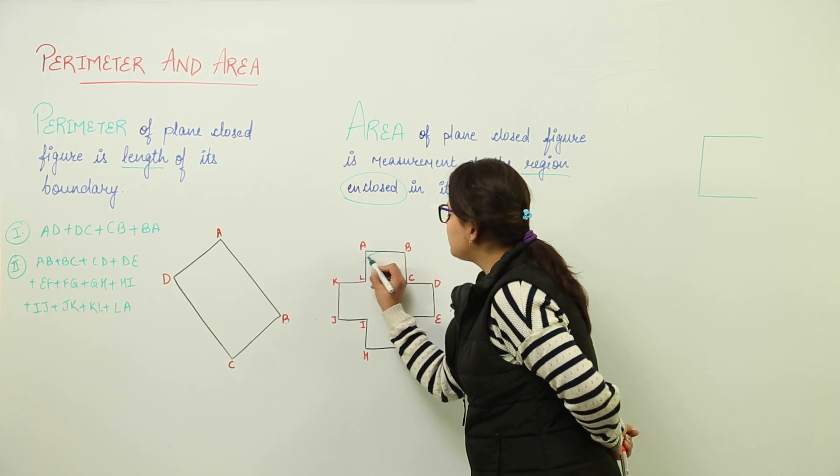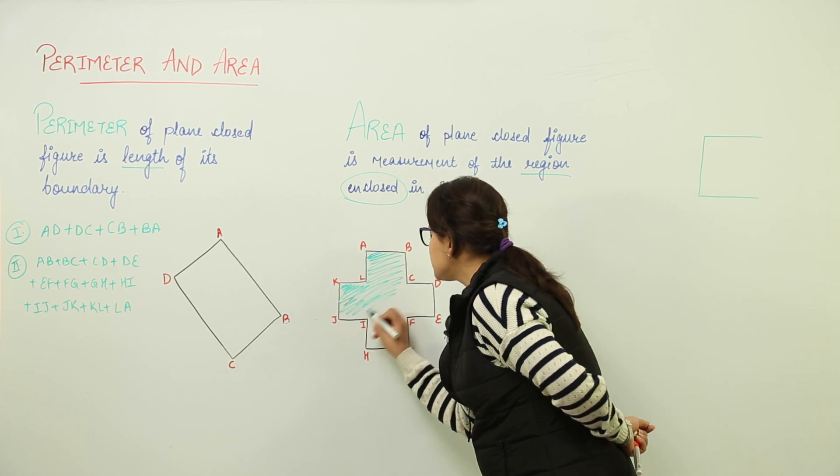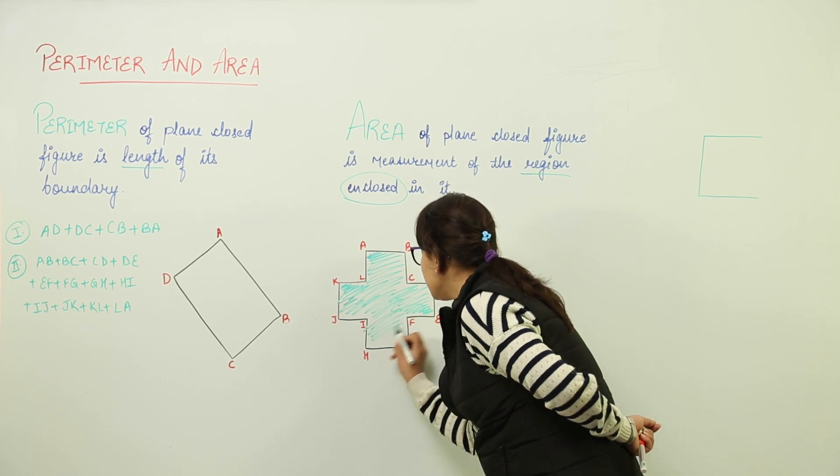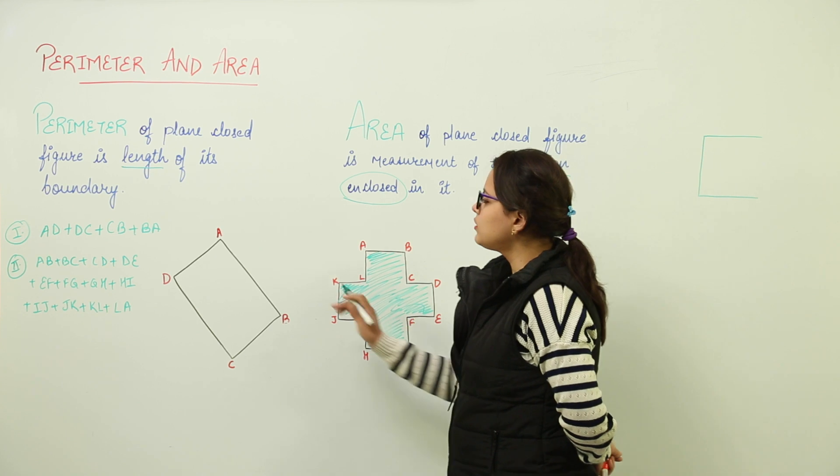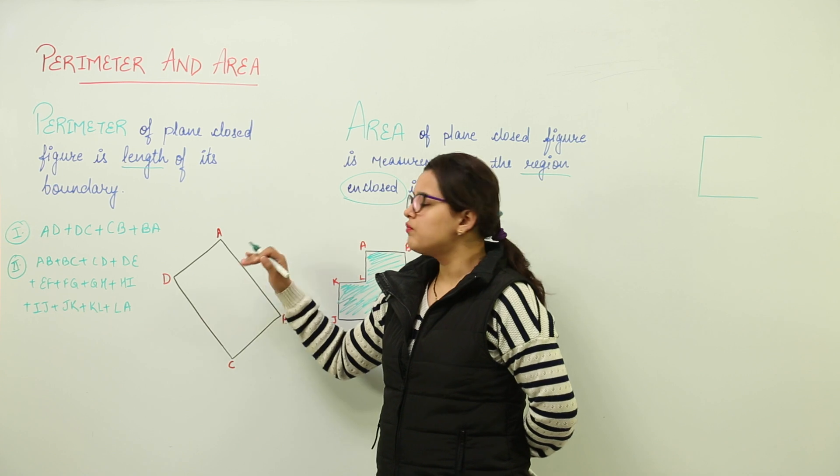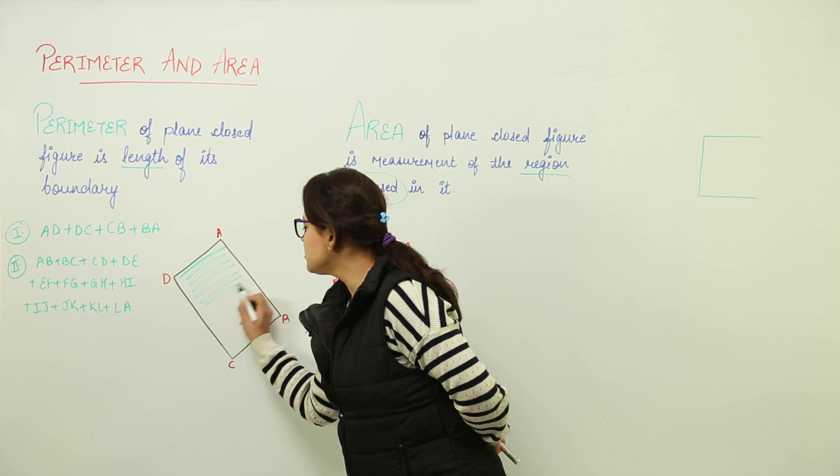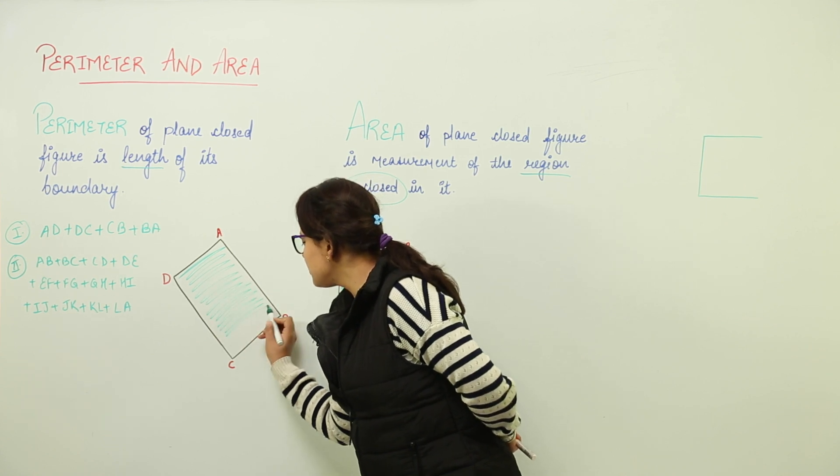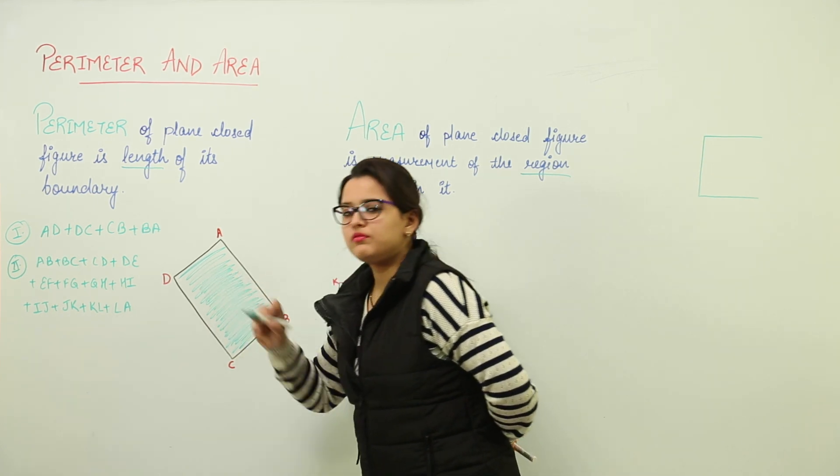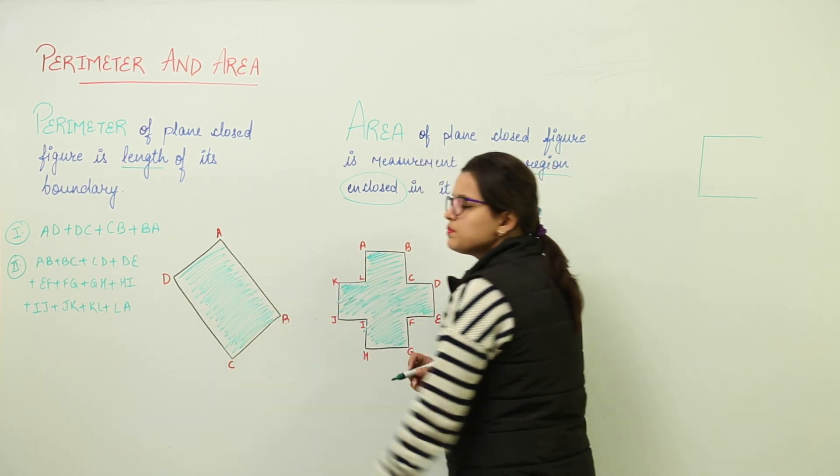So, if I want to highlight the area for this, that would be the one that I am shading now. So, the shaded region that I am marking over here is representing the area for this shape. Similarly, what will be the area for this shape? It would be the area or you can say the area would be the region enclosed. The region enclosed would include all this portion. So, the area is defined as the region enclosed in the plane figure. Any closed figure is having some region. That region represents the area.